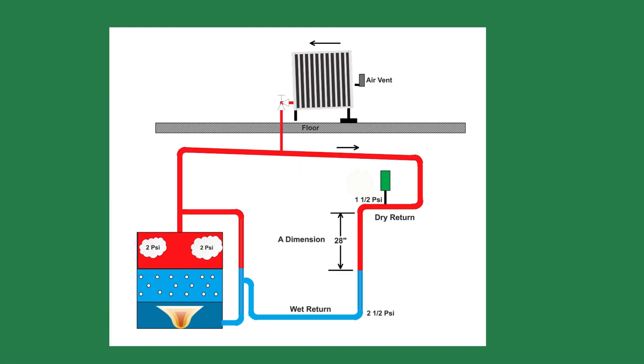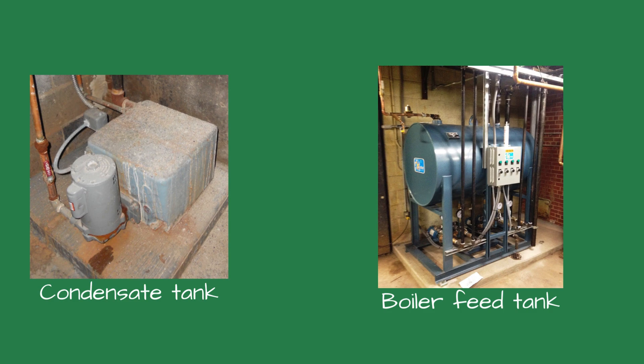In a residential steam system, the condensate is returned to the boiler by gravity and leftover steam pressure. Commercial systems require a mechanical method of returning condensate to the boiler because the building is much larger than a home. That job falls to either a condensate or boiler feed tank.